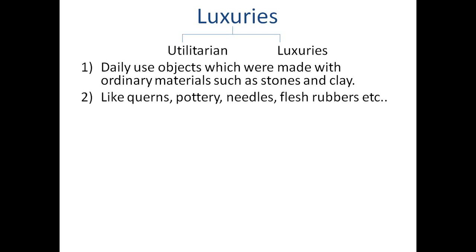The objects that people used at that time include quans — quans means chakiyan (grinding stones) — pottery, pots, needles, and flesh rubbers, which are just like body scrubbers. Quans were made from stones, pottery from clay, needles from stones, and flesh rubbers from stones. All these objects were used in their daily routine and were made from stone and clay.